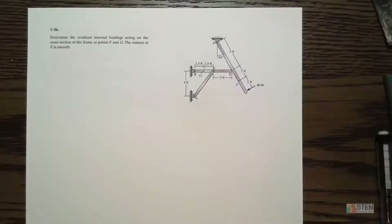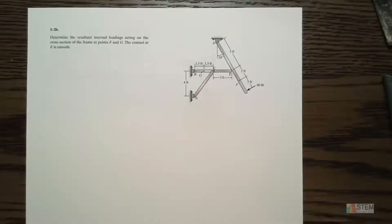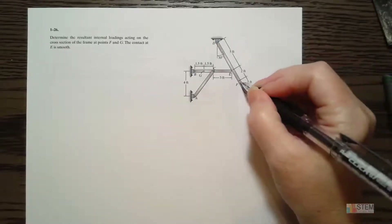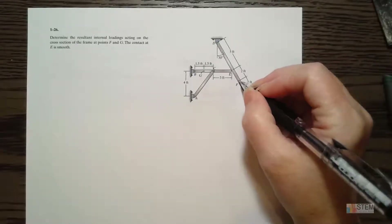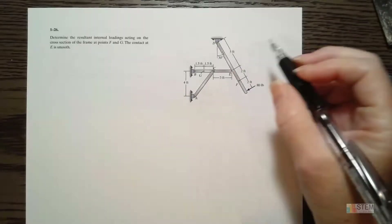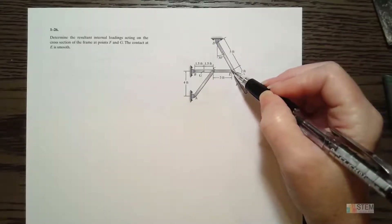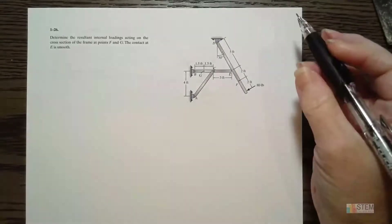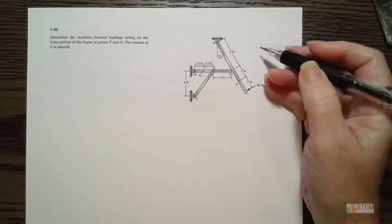Let's do number 126 out of the Hibbeler text. This one is going to make us find the resultant internal loadings acting on the cross section of the frame at points F, which is here, and point G. The contact here at E is smooth, so we don't have to worry about friction.